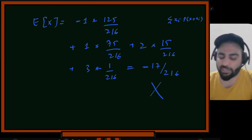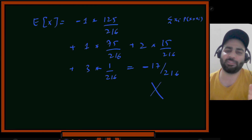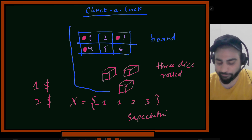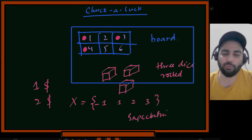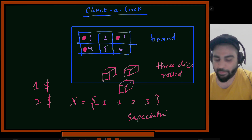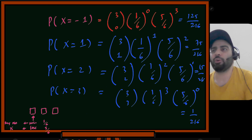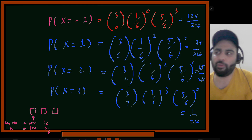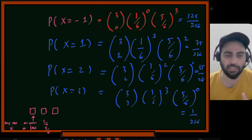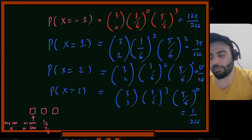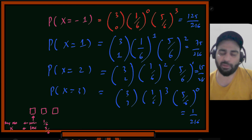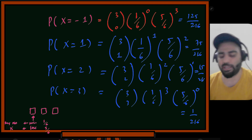If the expected value were slightly positive, I would recommend playing. But since it's negative, you lose money on average. The key lesson: learning to model real-world problems in probability terms is the hard part. Once you model it correctly, the math is straightforward. The only way to get better is to solve many real-world problems.